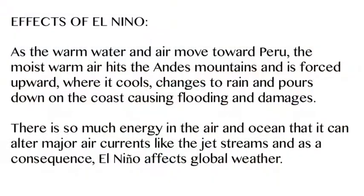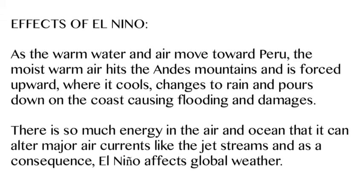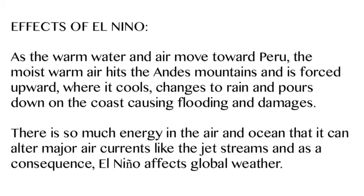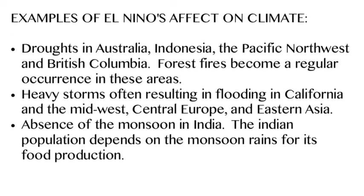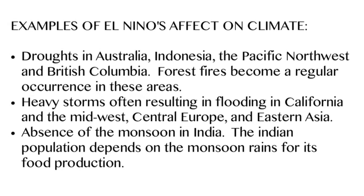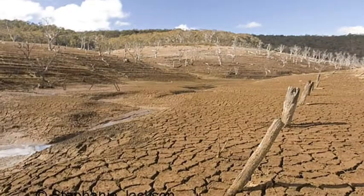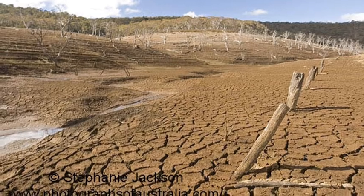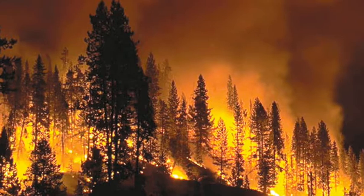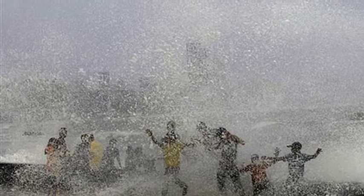People start starving, but that's just the start of El Niño. As the warm water and air move toward Peru, that moist air hits the Andes Mountains, is forced up, cools, and just pours down on the coast causing flooding. El Niño doesn't just affect Peru — it causes droughts in Australia and Indonesia, flooding in California, the Midwest, and Central Europe, and it disrupts the monsoon in India. It changes the jet stream, causing widespread effects.